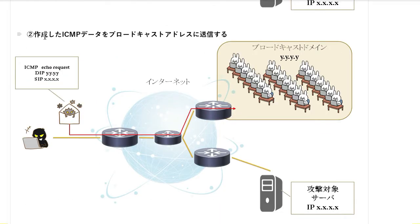次はその2、作成したICMPデータをブロードキャストアドレスに向かって送信します。ソースIPをXXXX、攻撃対象のサーバーのIPアドレスに偽装して、デスティネーションIP、宛先のIPアドレスとしてブロードキャストアドレス、YYYYを指定します。ブロードキャストドメインに対してブロードキャストアドレスというのがありますので、YYYYを設定して、ブロードキャストアドレス向けに送信します。